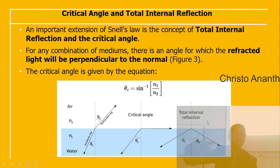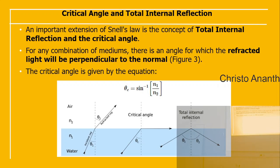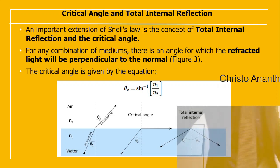Total internal reflection (TIR) is an extension of Snell's law. For certain combinations of media, there is an angle at which the refracted light is perpendicular to the normal — the critical angle. The critical angle is θ_c = sin⁻¹(n₁ / n₂), derived from the condition sin θ_c = n₁ / n₂.